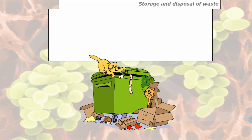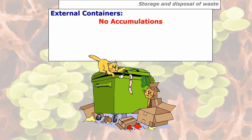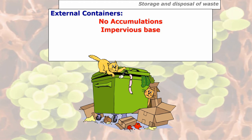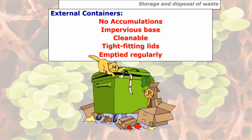With outside bins, they also have certain properties. No accumulations — boxes left outside with food material will attract pests. They must be held on an impervious base, such as concrete, tarmac, or patio tiles, but certainly not on soil or grass because that's where pests tend to hide — pests don't like open spaces, they need somewhere to hide. They must be cleanable, preferably disinfectable throughout the summer, for example disinfected once a week with a power wash, and during winter perhaps once a month. Tight fitting lids so pests can't gain access, and emptied regularly by your local council or contractor.